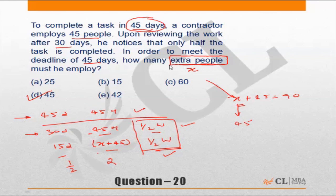Let the extra people be x, because the question is asking for extra people. Suppose the question is how many total men should he employ, then I would have said let the total number of people be x. I do it to ensure I don't make a mistake. Otherwise, typically if you take the total number of people to be x, you will get x is equal to 90.